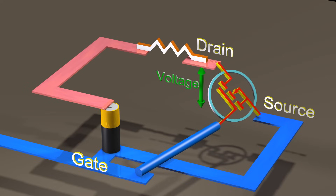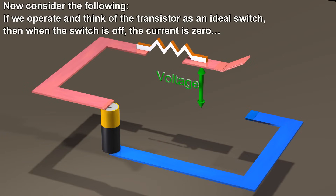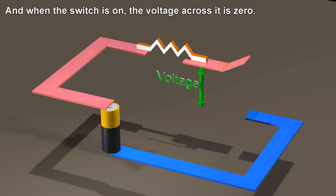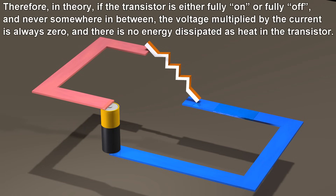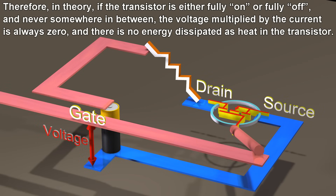Now, consider the following. If we operate and think of the transistor as an ideal switch, then when the switch is off, the current is zero. And when the switch is on, the voltage across it is zero. Therefore, in theory, if the transistor is either fully on or fully off, and never somewhere in between, the voltage multiplied by the current is always zero, and there is no energy dissipated as heat in the transistor.